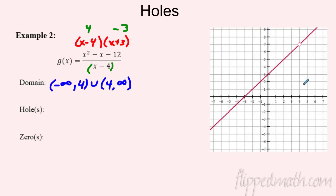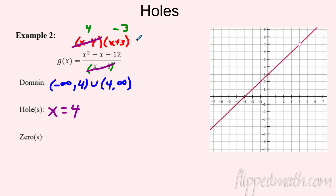There's a whole section on holes coming up, but let's look at the graph — there's actually a hole. When the same factor appears in both the numerator and denominator, they cancel out, creating a hole. So there's a hole at x = 4, which means it's not a zero even though it made the top zero. The only real zero here is x = -3, our x-intercept.